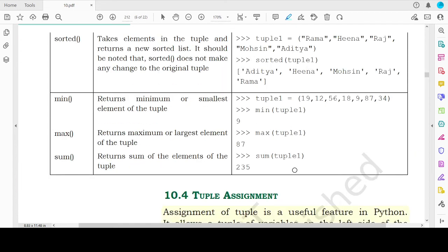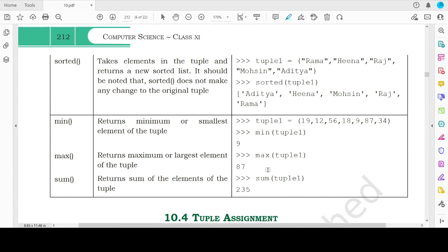Now coming to the sorted function. Sorted function is used to sort the elements in the tuple and in the case of tuple, it will return a sorted list of elements. So it should be noted that no change will be made in the original tuple and the return value will be a sorted list.